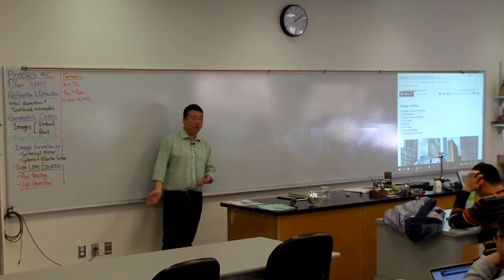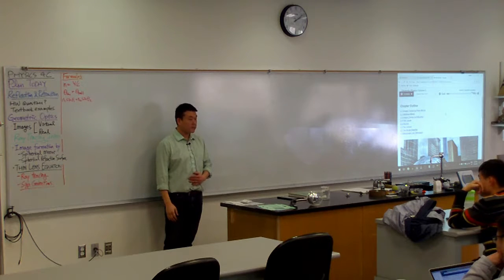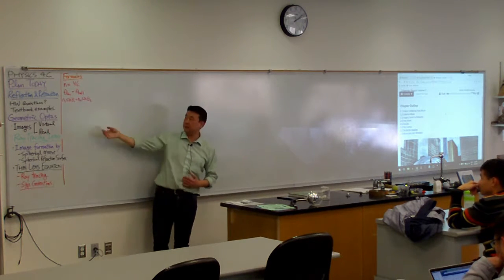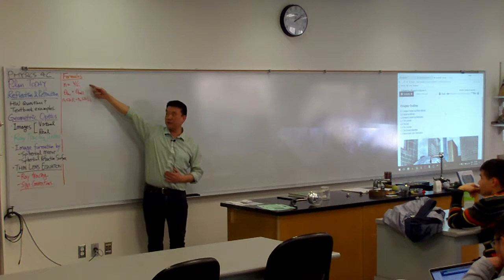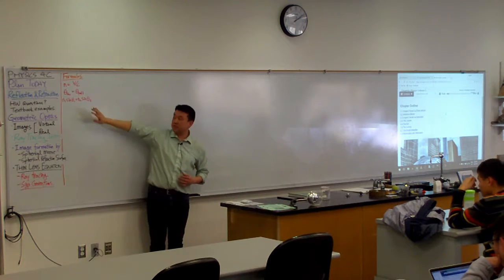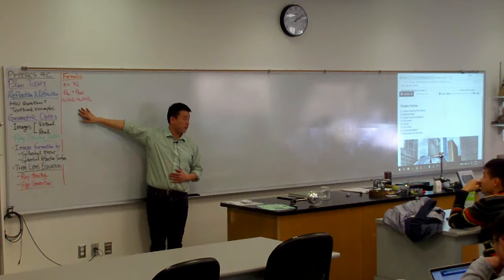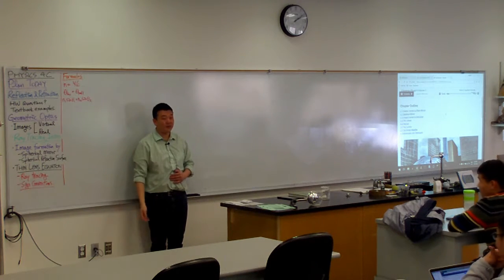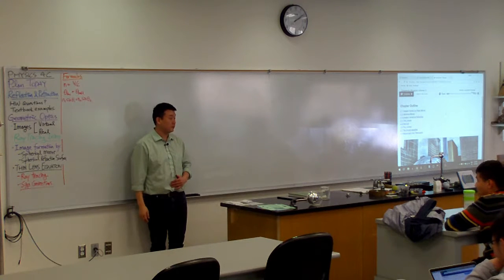So the formulas that I prefer to memorize are the ones that I cannot derive on the spot quickly. I guess these are kind of more of a definition, so I just write it down. Snell's law is the one that I would memorize because if you are trying to derive Snell's law from scratch, that takes a little bit too long and you don't want to be doing that for every problem.